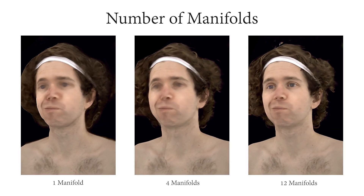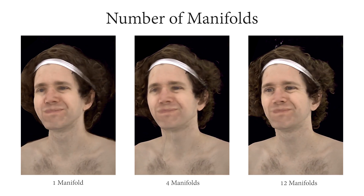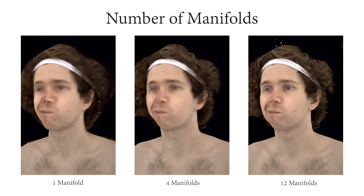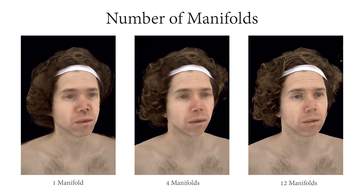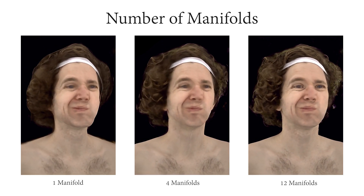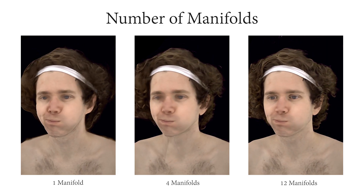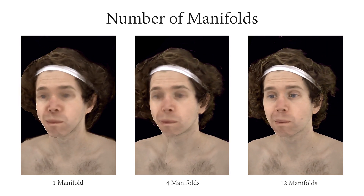We now provide more analysis of our method by ablating various design choices. Here, we show an analysis of our method trained with varying number of discrete manifolds, hence the number of layers in the exported mesh. Note that using a single manifold is equivalent to expressing the dynamic face geometry with a single mesh and is incapable of modeling any volumetric effects in the hair. Four manifolds begin to model some volumetric effects, and we see the best results with 12. We do not notice significant improvements beyond 12 manifolds, so we restrict our method to that number of layers.